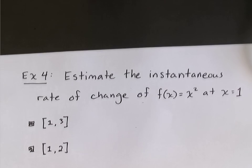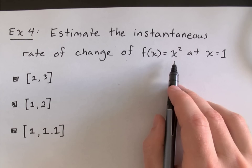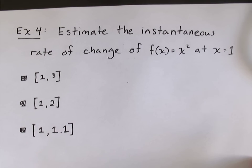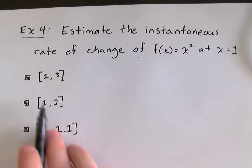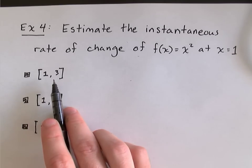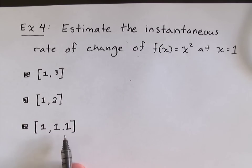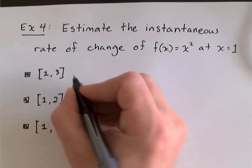So, here's our last example. Find the instantaneous rate of change, or estimate the instantaneous rate of change, of the function x squared at the point x equals 1. And how I plan to do this is look at a shrinking interval all built around x equals 1. So, at first, my interval is 2 units long from 1 to 3. And then it's 1 unit long. And then it's only 0.1 units long. And I can make it smaller and smaller and smaller.